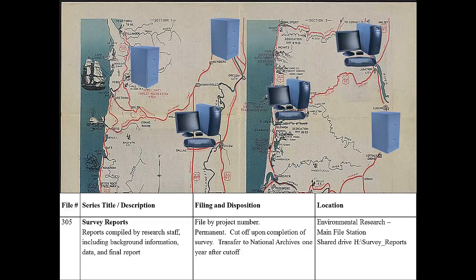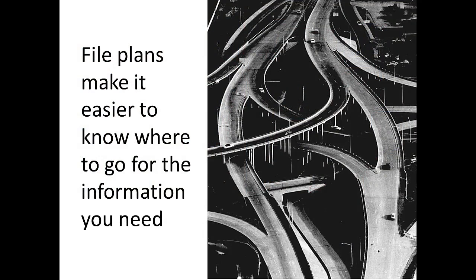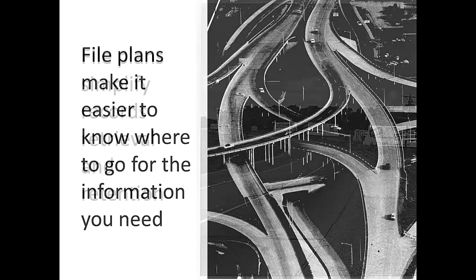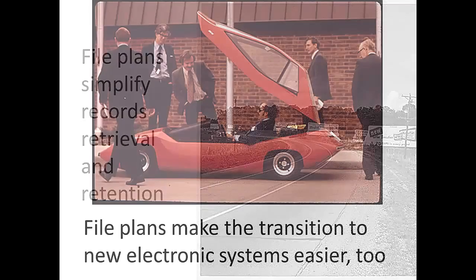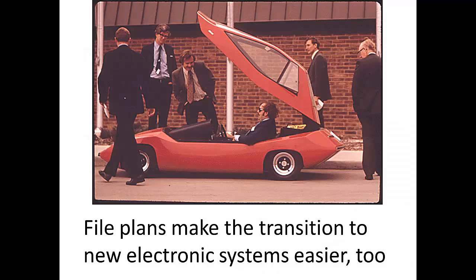It doesn't take long to prepare a file plan, and there are several good reasons to create one. File plans make it easier for everyone to know what kinds of records your office has and where those records are stored. They are especially useful for new employees, staff who are cross-training or helping in another department, and others who might not work with your records on a daily basis. A good file plan can help your legal counsel and Freedom of Information Act staff locate needed records more quickly. It also makes it much easier for you and your colleagues to know what information to keep and for how long. A file plan can even make the transition to electronic record keeping easier by helping you build more effective organization and records retention practices into new electronic information systems.